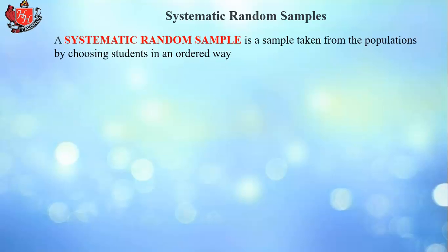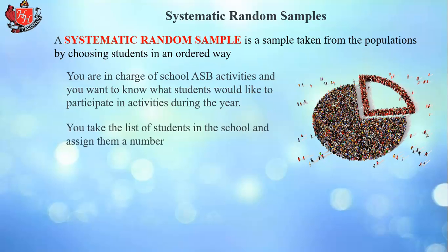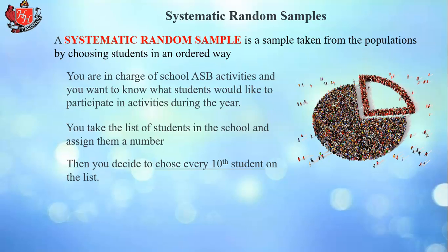A systematic random sample is taken from the population by choosing individuals in an ordered way. You take a list of students, assign them a number, and choose every tenth student on the list. This avoids oversampling — for example, other surveys might just take the first 50 names alphabetically, which oversample students whose last names begin with A. By choosing every tenth student, you get a random smattering of people throughout the list.